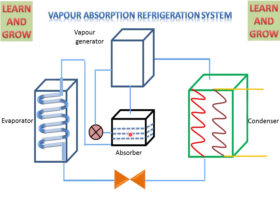The absorber has both water and ammonia. This pump will pump the water and ammonia to the vapor generator. In the vapor generator, ammonia will convert into vapor and water will come back to the absorber.